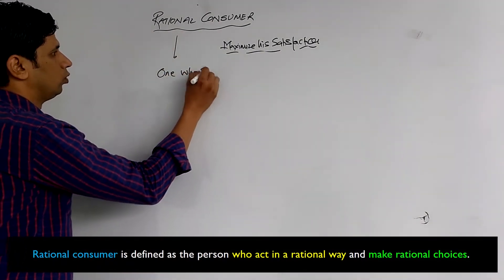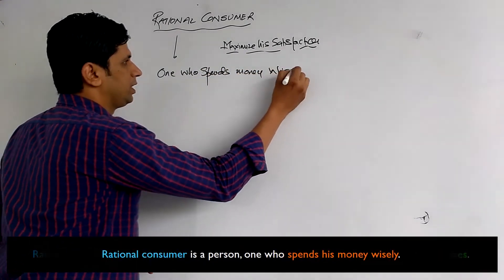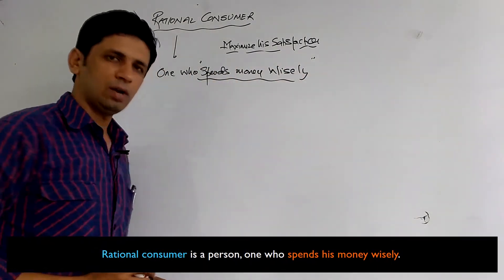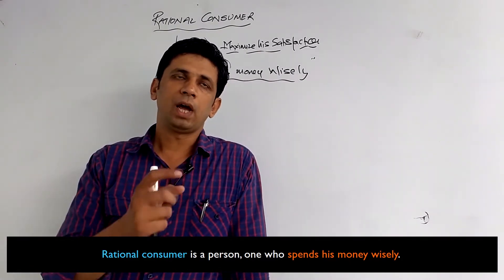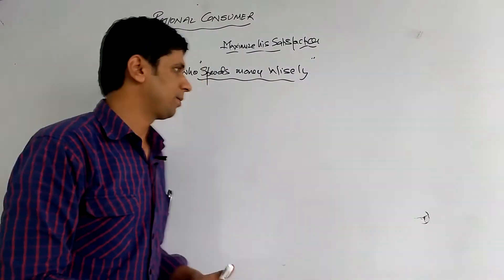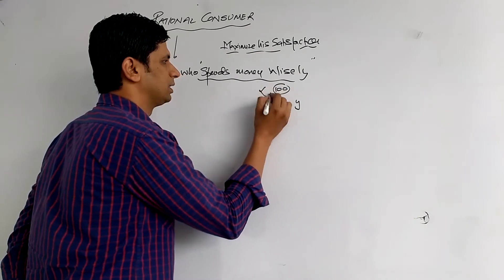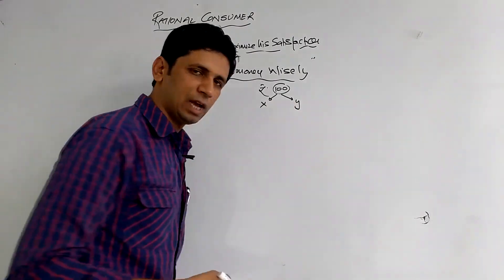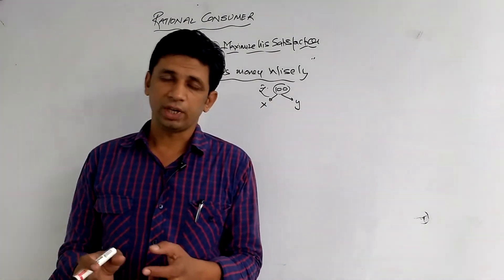The one who spends money wisely — a person who earns money and then pays their money in the market. If that person has two products available, product X and product Y, and both are priced at 100 rupees, this person will spend their 100 rupees where they will get more utility and more satisfaction.